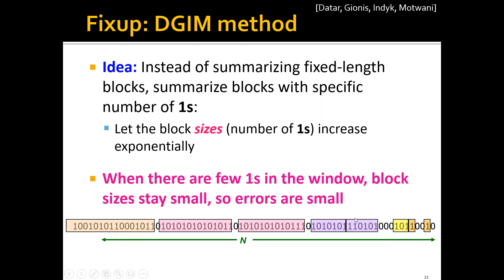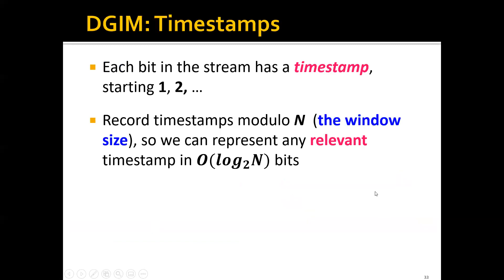The actual size of the bucket depends on how many bits it has to include in order to have the exact number of ones in the bucket. Now, each bit in the stream has a timestamp starting one, two, three, et cetera. And basically we will need to record the timestamps modulo M, which is the window size.